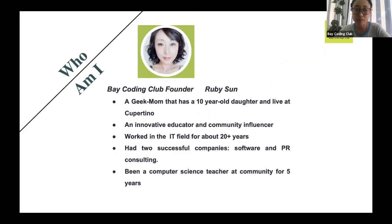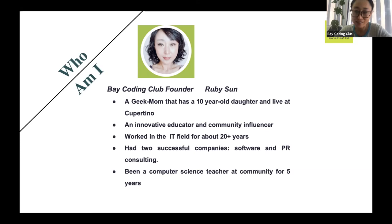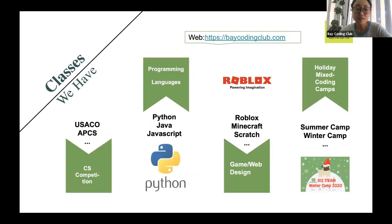This is me. My name is Ruby Sun, and I'm the founder and CEO of Bay Coding Club. I'm a mom with a 10-year-old daughter, and I live in Silicon Valley with my husband who works at Apple as an engineer. I have experience in the information technology field for over 20 years and I love to teach kids computer science in our community. If you want to know more information, log on to baycodingclub.com.